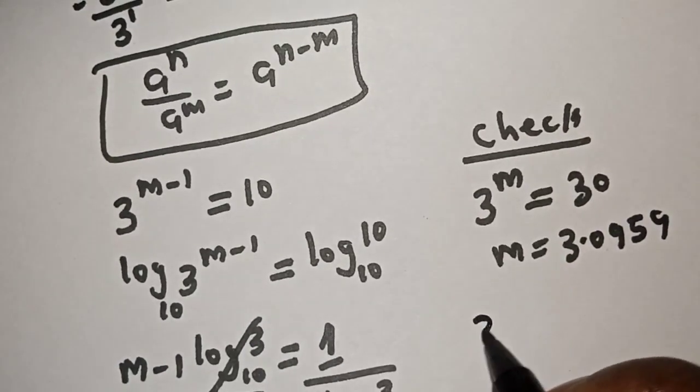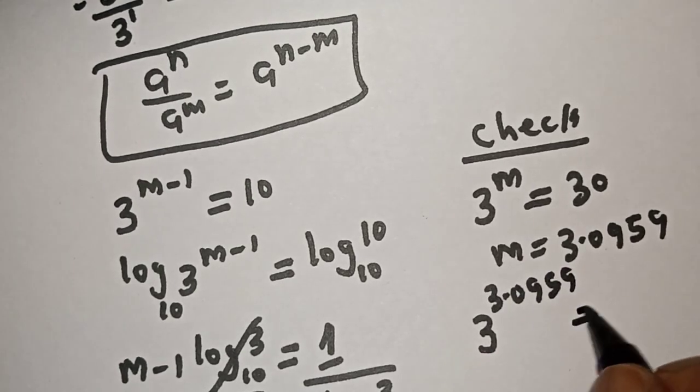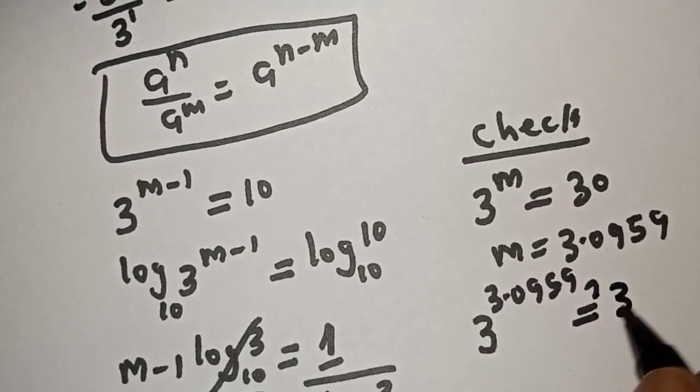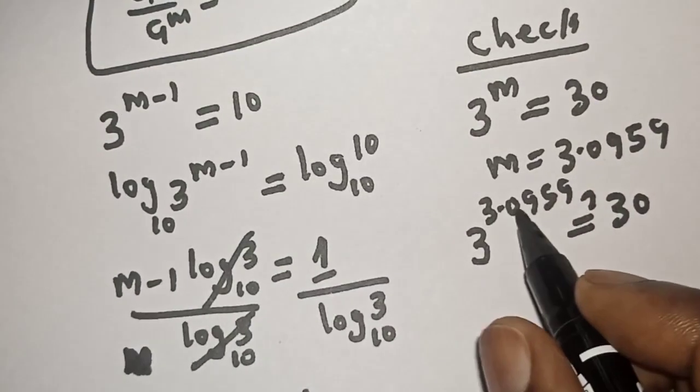We have 3 raised to power 3.0959 must be equal to 30. So, 3 raised to power 3.0959.